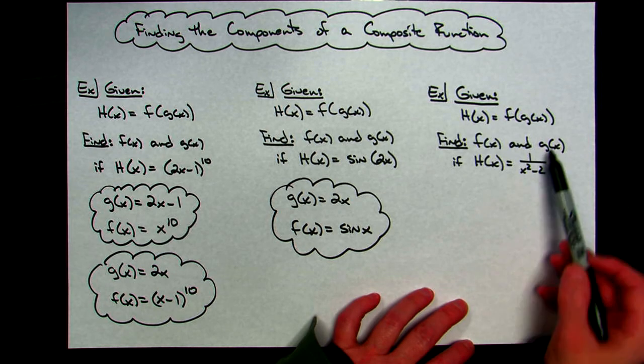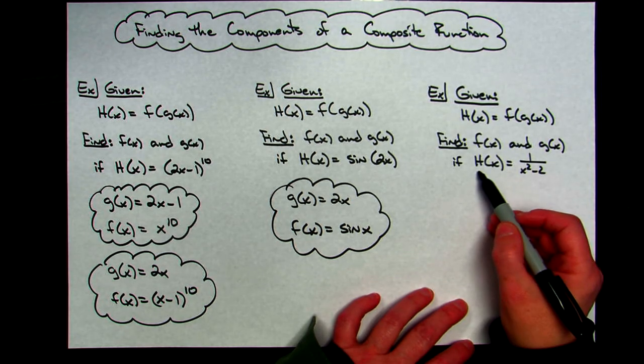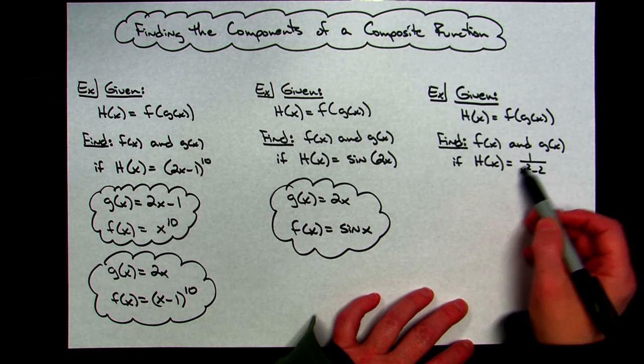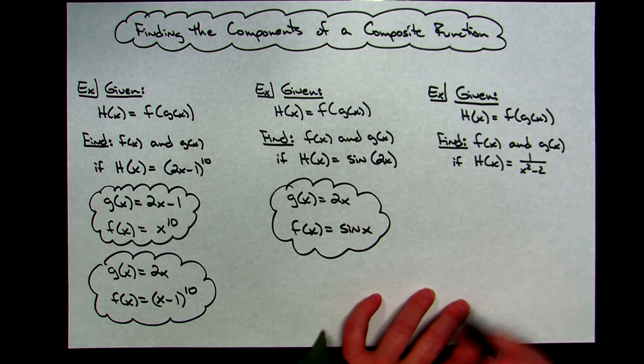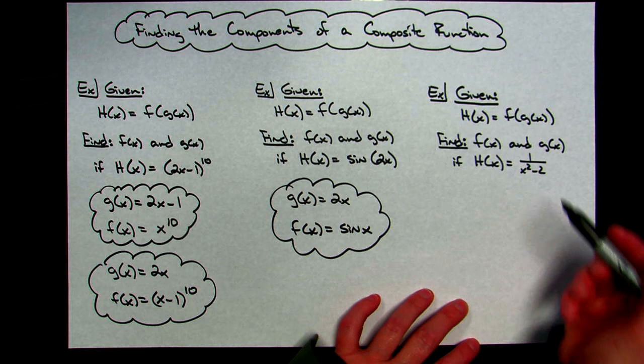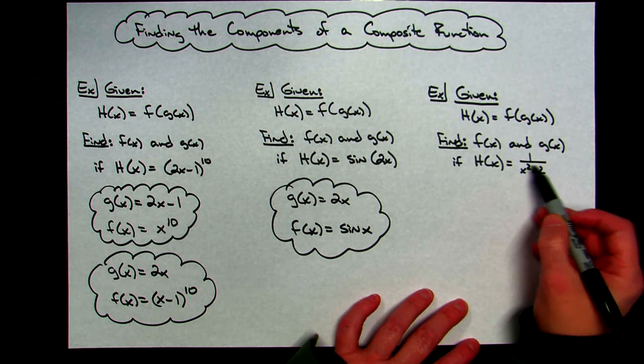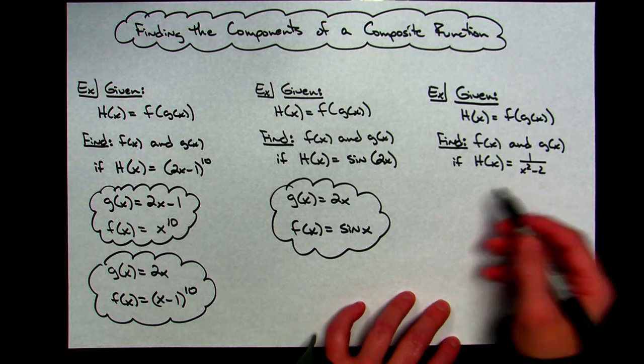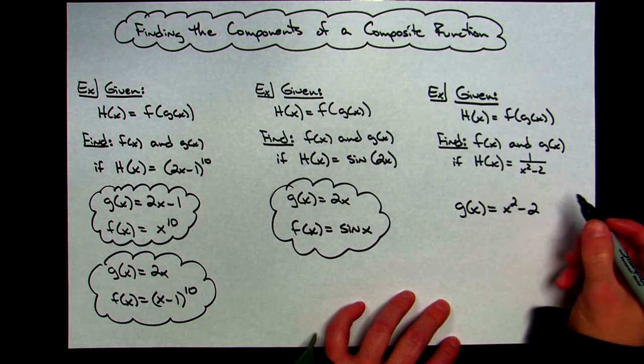And then going through this last example here really quick. Everything is set up the same way. I want you to find the inside and the outside functions. If my composite function h of x is equal to 1 over x squared minus 2, you kind of got to ask yourself where's the inside function? Well, I'm kind of seeing this complicated expression right here being the inside. If I let g of x be that x squared minus 2,